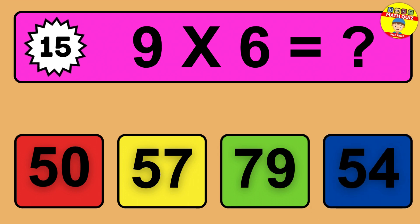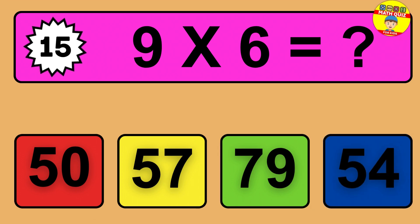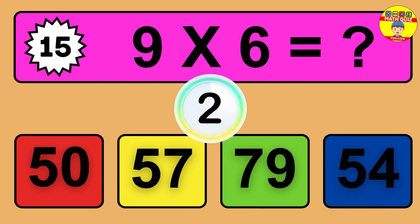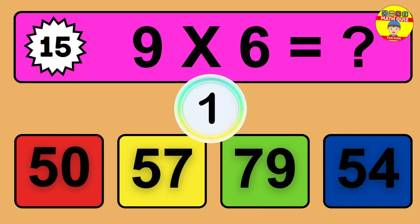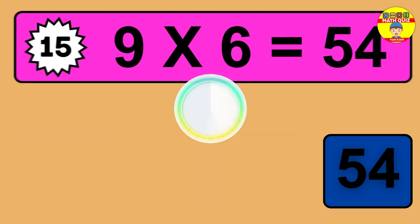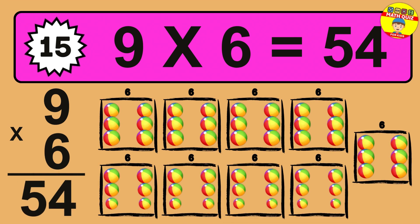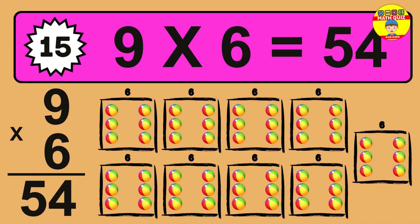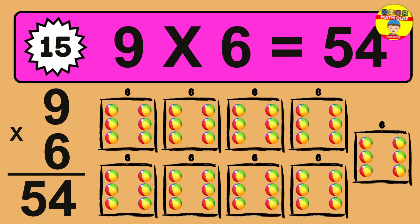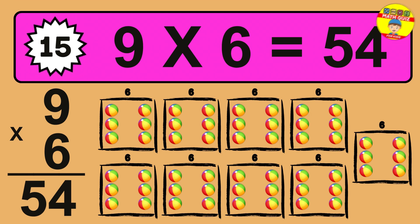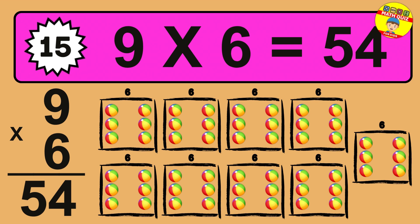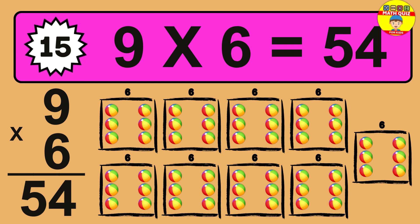Question 15. 9 times 6 equals what? The answer is 9 times 6 is 54. To calculate, we have 9 groups with 6 balls each one. So how many balls do we have? 54 balls.